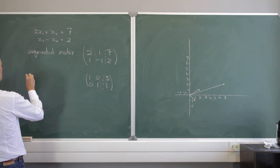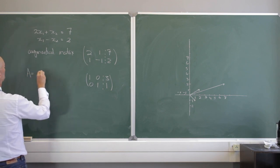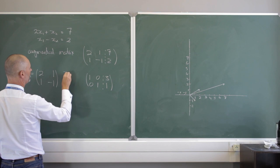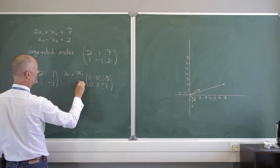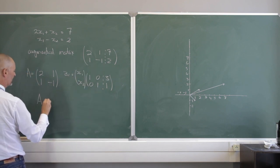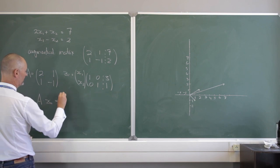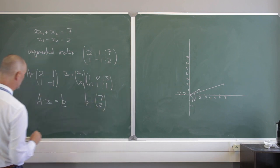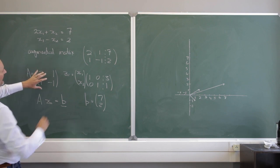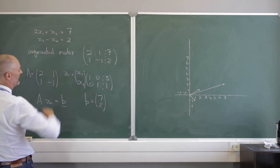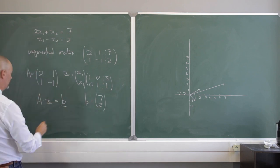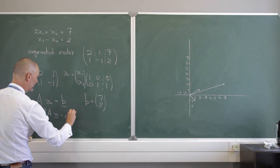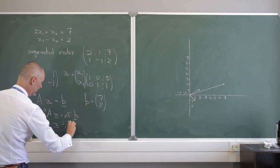I could also write my matrix of coefficients A as 2, 1 and 1, negative 1, with column vector x containing x sub 1 and x sub 2. If I compute A times x, that matrix-vector product gives my solution vector B equal to 7 and 2. If we could get A inverse, then x equals A inverse B.